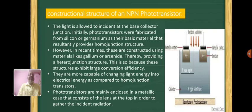Initially, phototransistors were fabricated from silicon or germanium as their base material that provides homojunction structure. However, in recent times, these are constructed using materials like gallium arsenide, thereby providing a heterojunction structure because these structures exhibit large conversion efficiency.